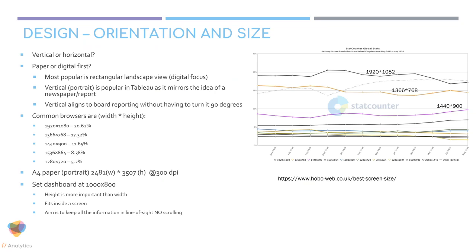I set my dashboard at around 1000×800 pixels. Height is more important than width because I'm thinking of a page rather than a full widescreen. I try to keep all information within line of sight with no scrolling — that's the one-page dashboard principle. Screen size should be something to think about carefully in terms of orientation when building your own dashboard.